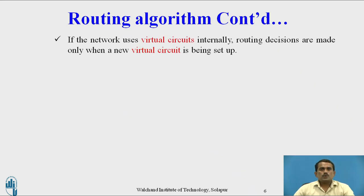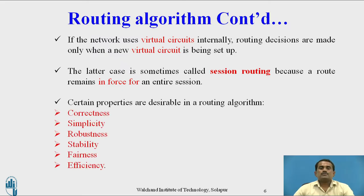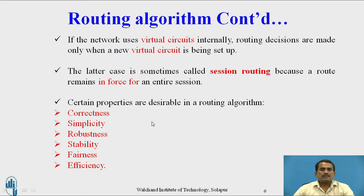If the network uses virtual circuits internally, routing decisions are made only when a new virtual circuit is being set up. This is sometimes called session routing, because the route remains in force for an entire session. Certain properties are desired in a routing algorithm: correctness, simplicity, robustness, stability, fairness, and efficiency.